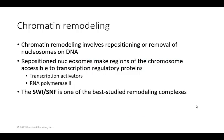Chromatin remodeling involves the repositioning or removal of nucleosomes on the DNA. These repositioned nucleosomes make regions of the chromosome accessible to transcription regulatory proteins, such as transcription activators and RNA polymerase. There are several remodeling complexes, but the SWI/SNF complex is probably the best-studied. Understanding how this global gene regulation happens is important because without this process, you can shut down global gene transcription.